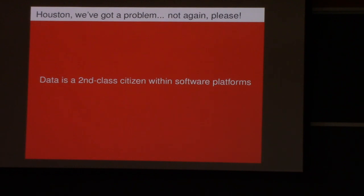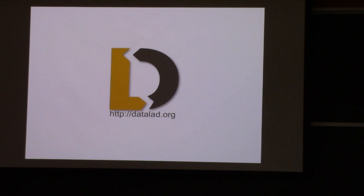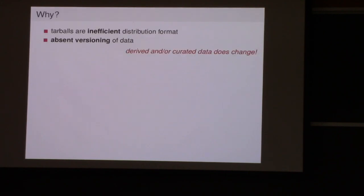We have Git and GitHub for code development and NeuroDebian for distributing software, but data is kind of a second-class citizen — everybody says 'we don't share, we don't version control.' We couldn't share big datasets through NeuroDebian because the Debian mechanisms aren't a good fit for data. So the DataLad project was born. Why DataLad? Tarballs are an inefficient distribution format — you download a tarball, they make a new release, and you redownload the whole thing even if only one kilobyte changed. There's also absent versioning of data: derived or curated data does change quite often, and we version it inefficiently with dates or renamed files.